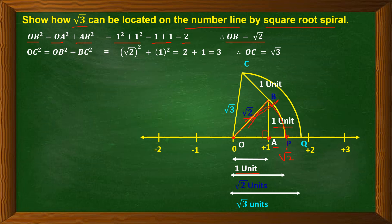Now this hypotenuse OB, which equals √2, will form the base for locating √3. We draw a perpendicular BC at point B, equal to 1 unit. OB is now the base and BC is the perpendicular. We join CO to get right angle triangle OBC, where the hypotenuse is OC. Applying Pythagoras theorem: OC² = perpendicular² + base² = (√2)² + 1² = 2 + 1 = 3. So OC = √3.